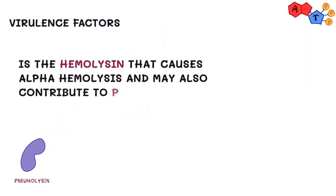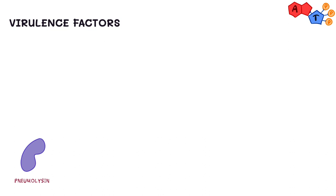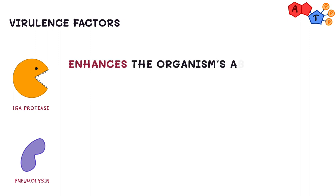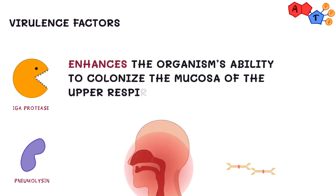Let us start by talking about pneumolysin, which is the hemolysin that causes alpha-hemolysis and may also contribute to pathogenesis of the organism. Another important virulence factor is IgA protease, that enhances the organism's ability to colonize the mucosa of the upper respiratory tract by cleaving IgA.